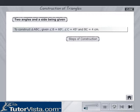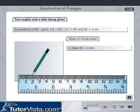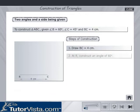The steps of construction are as follows. Draw a line BC is equal to 4 cm. At B, construct an angle of 60 degrees.